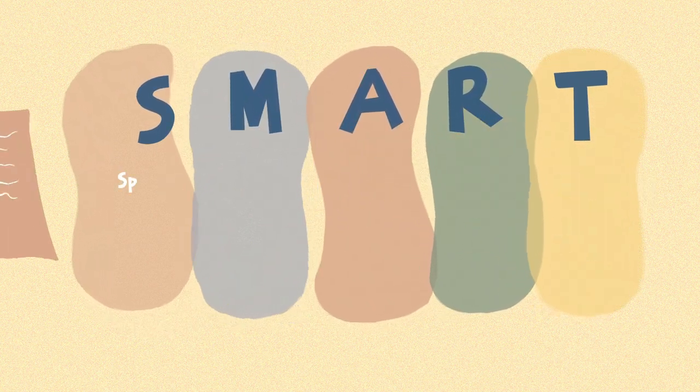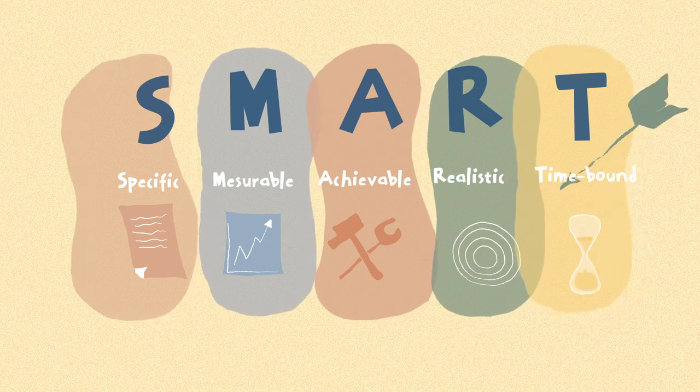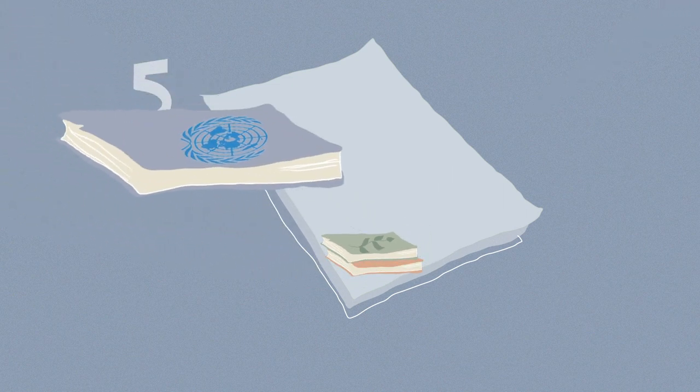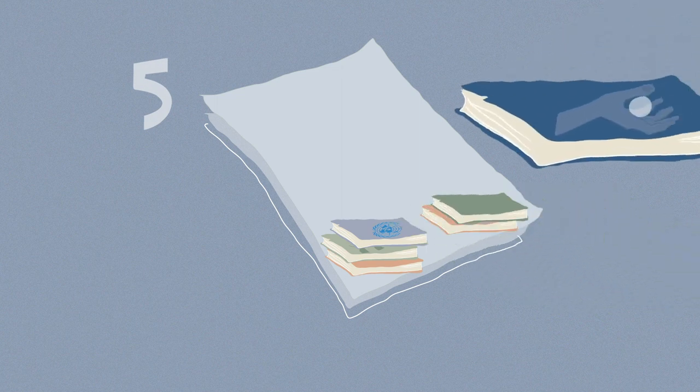Remember to make them SMART: specific, measurable, achievable, realistic and time-bound. 5. Refer to human rights treaties but also other guidelines, principles and standards with explicit reference to the ESC rights you are addressing.